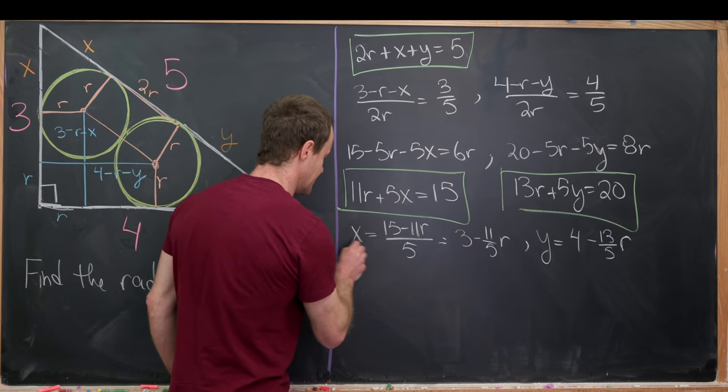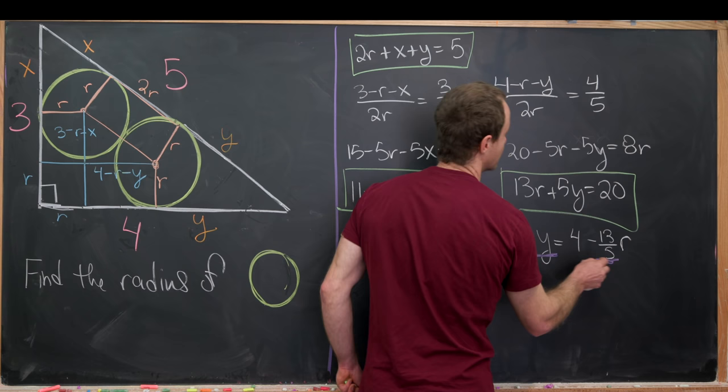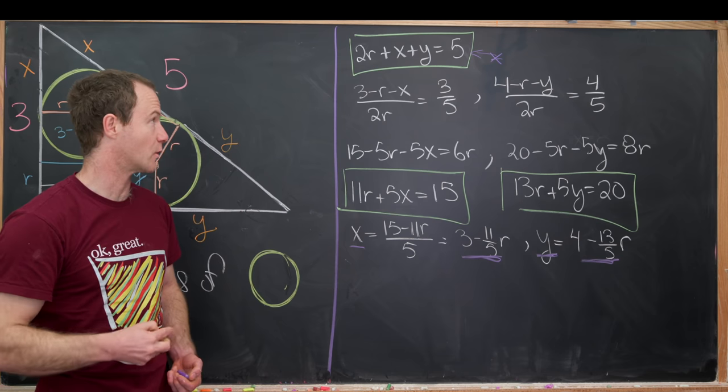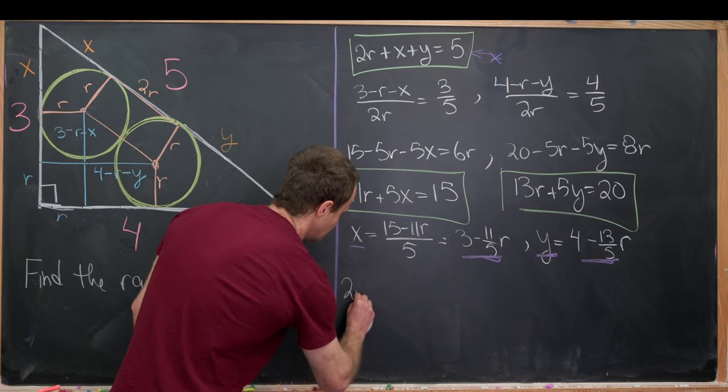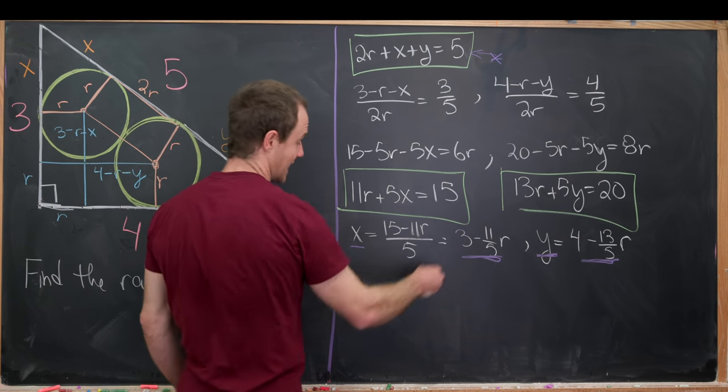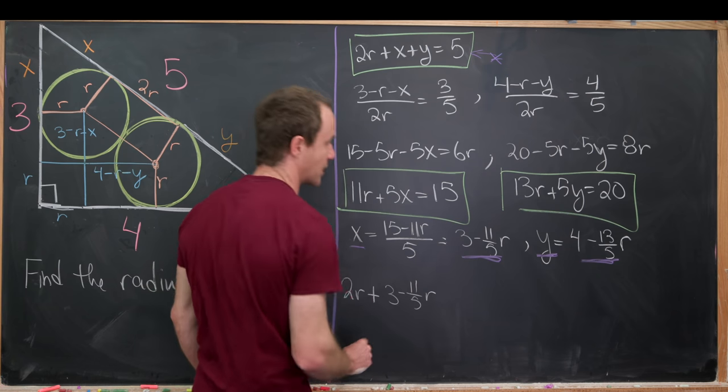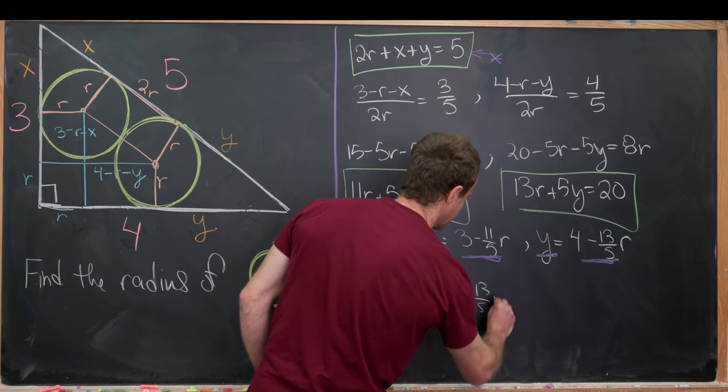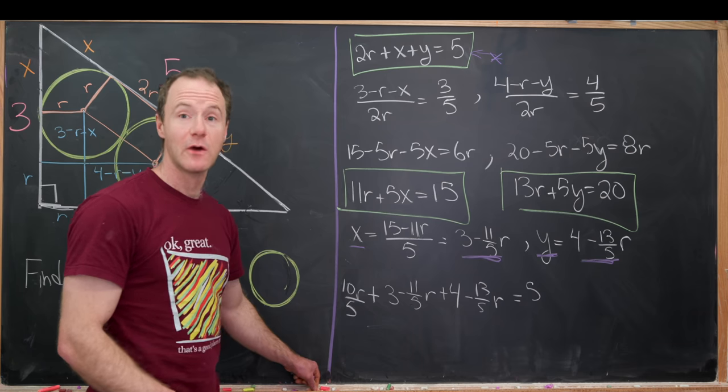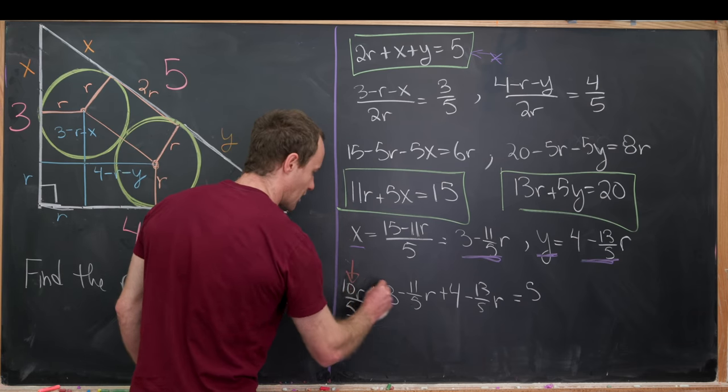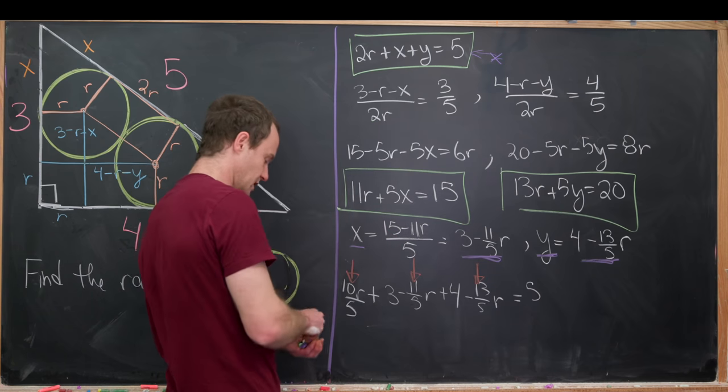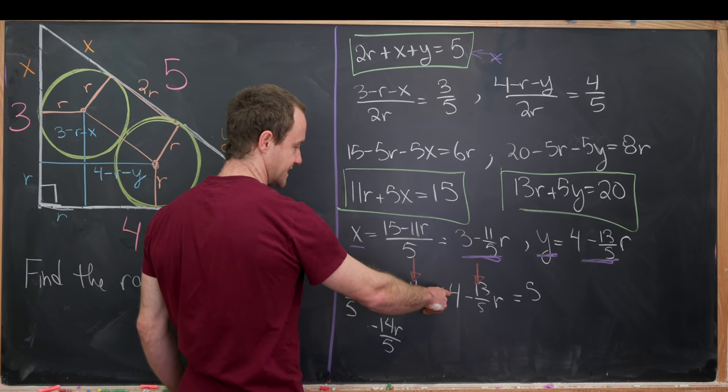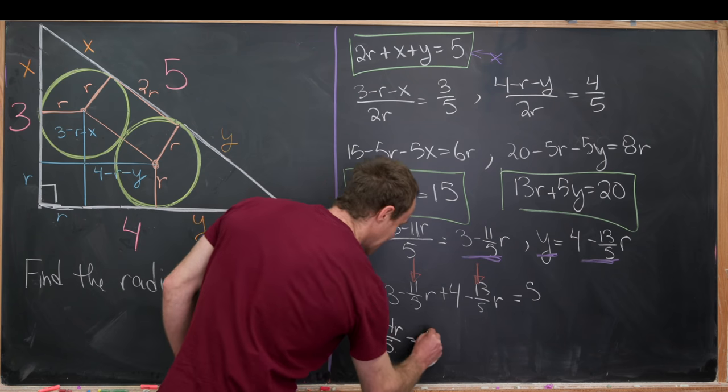Now what we'll do is take this value of x, this value of y and pull it into this equation up here. And then we'll have a single equation just for r. So we'll have 2r plus x. But now x is this. So that's 3 minus 11 over 5r. And then plus y. But y is that. So that's plus 4 minus 13 over 5r equals 5. And now we can start combining like terms. So if we combine the r terms, this one, this one, and this one, you'll see that we get minus 14r over 5. Then we have this 3 plus 4 is 7. And then subtract it over, we'll get negative 2.